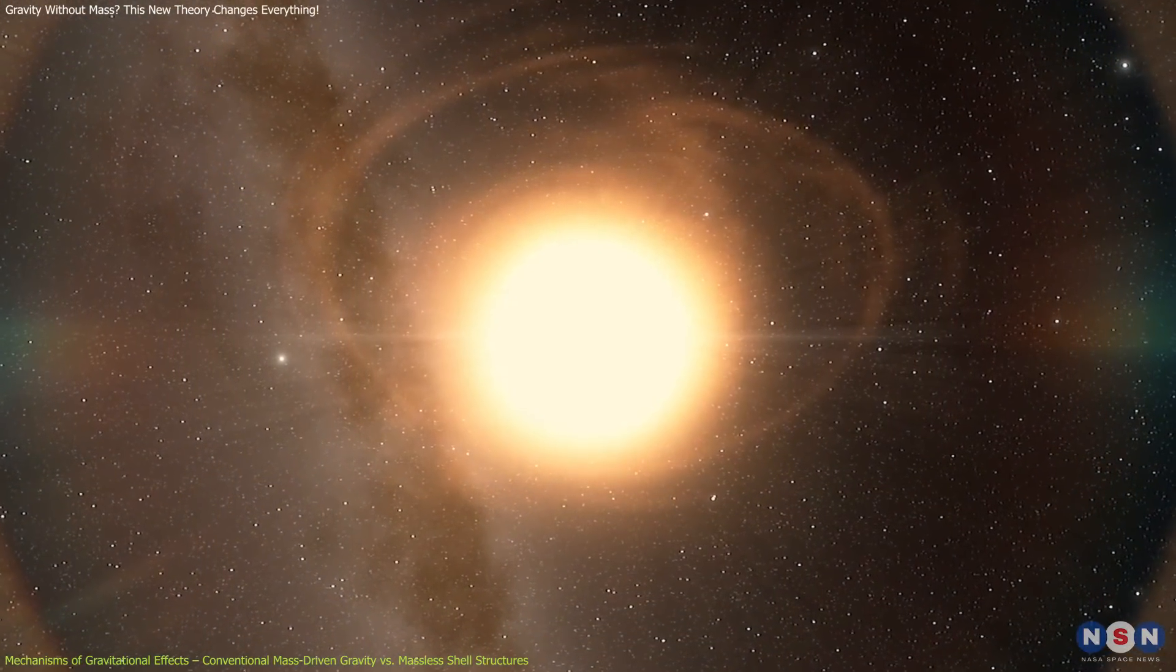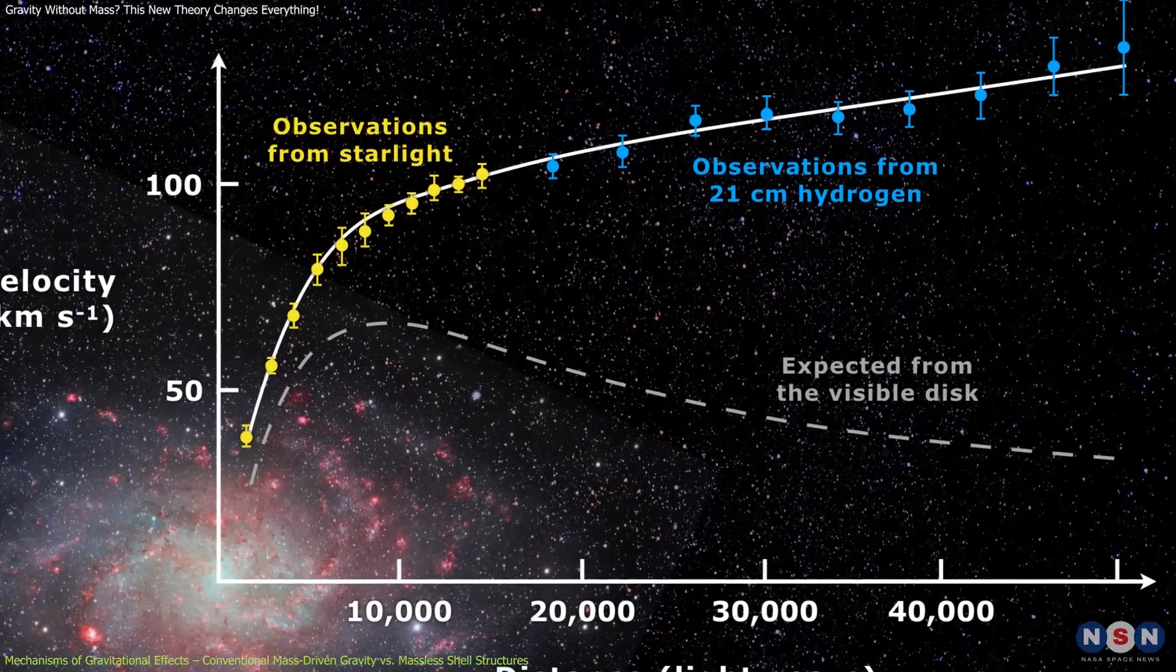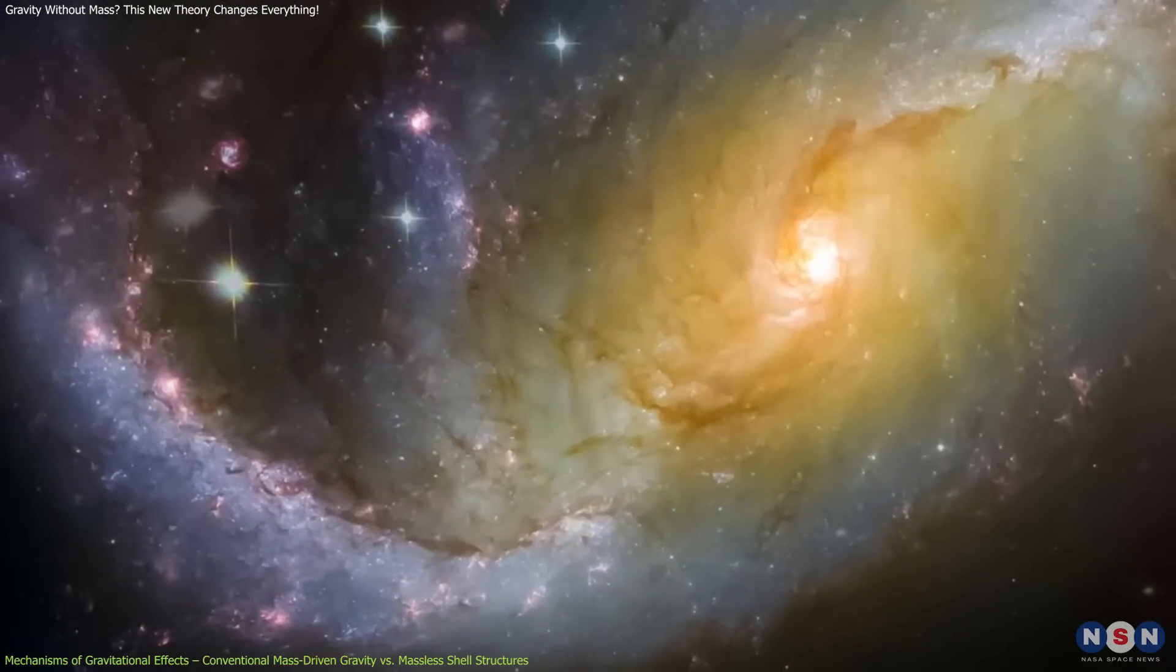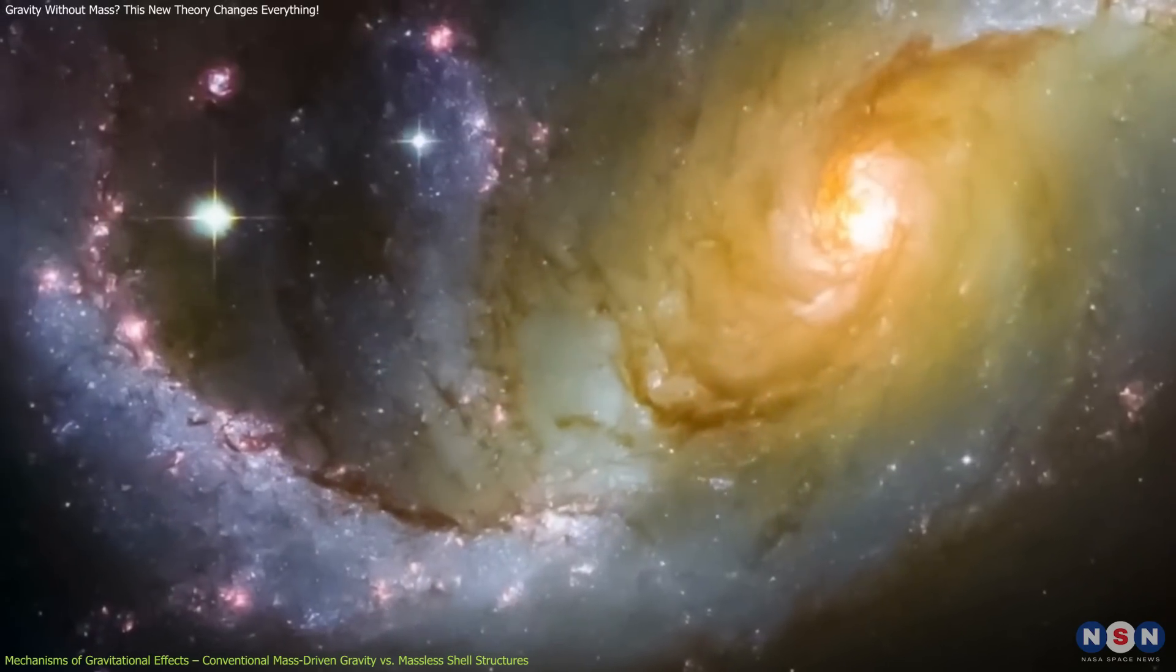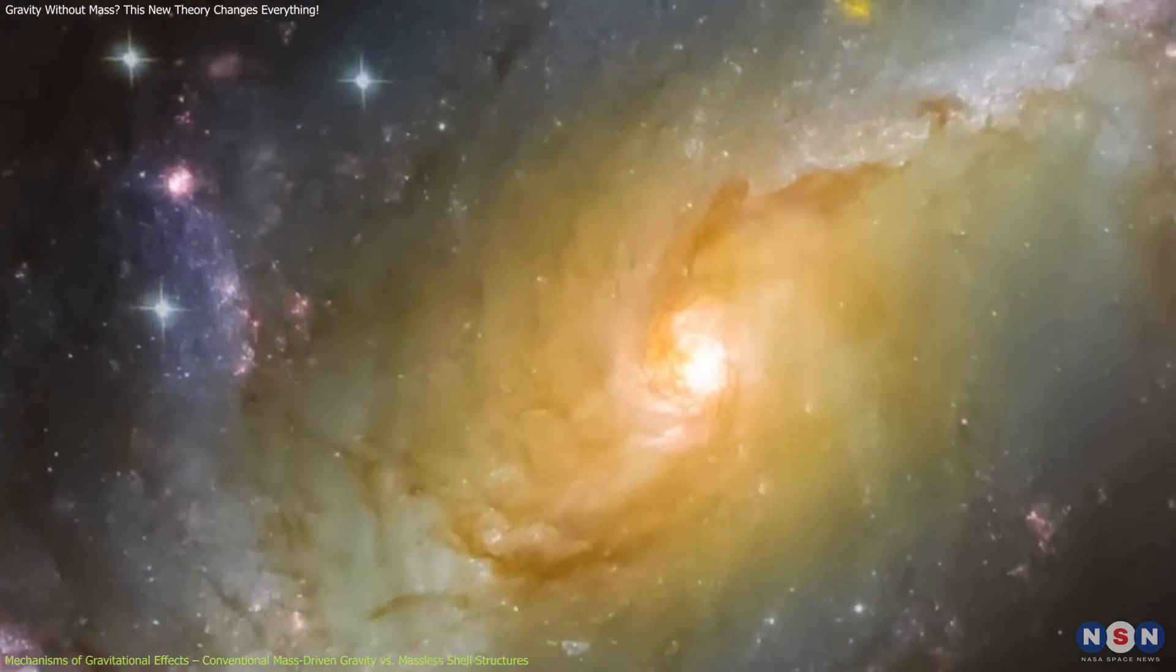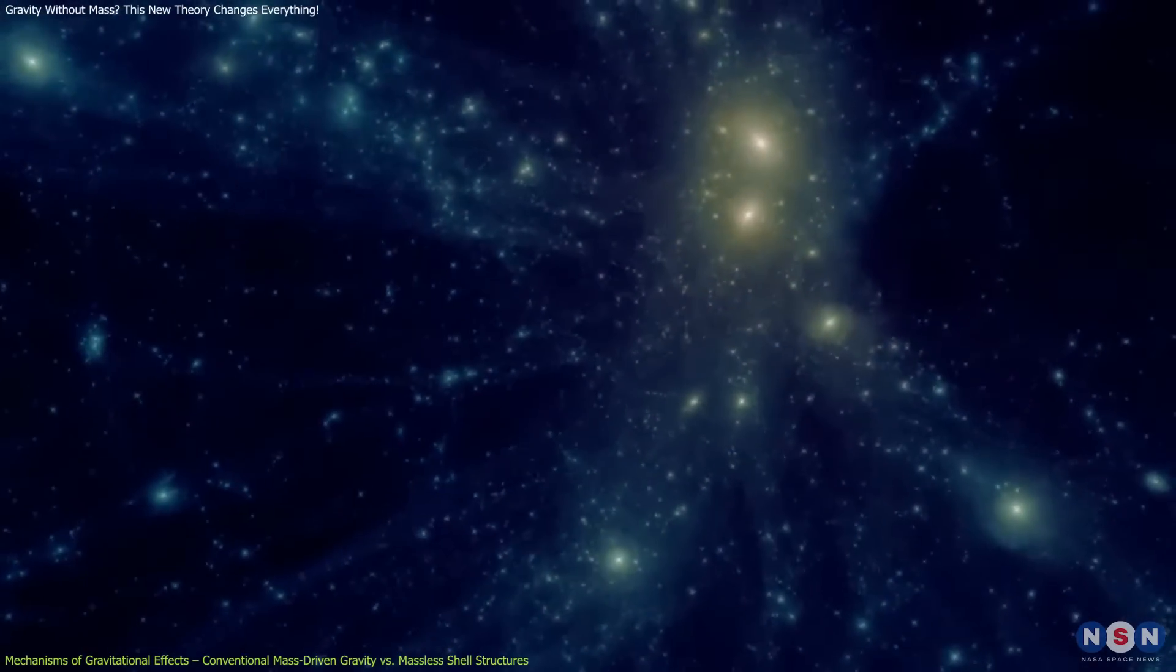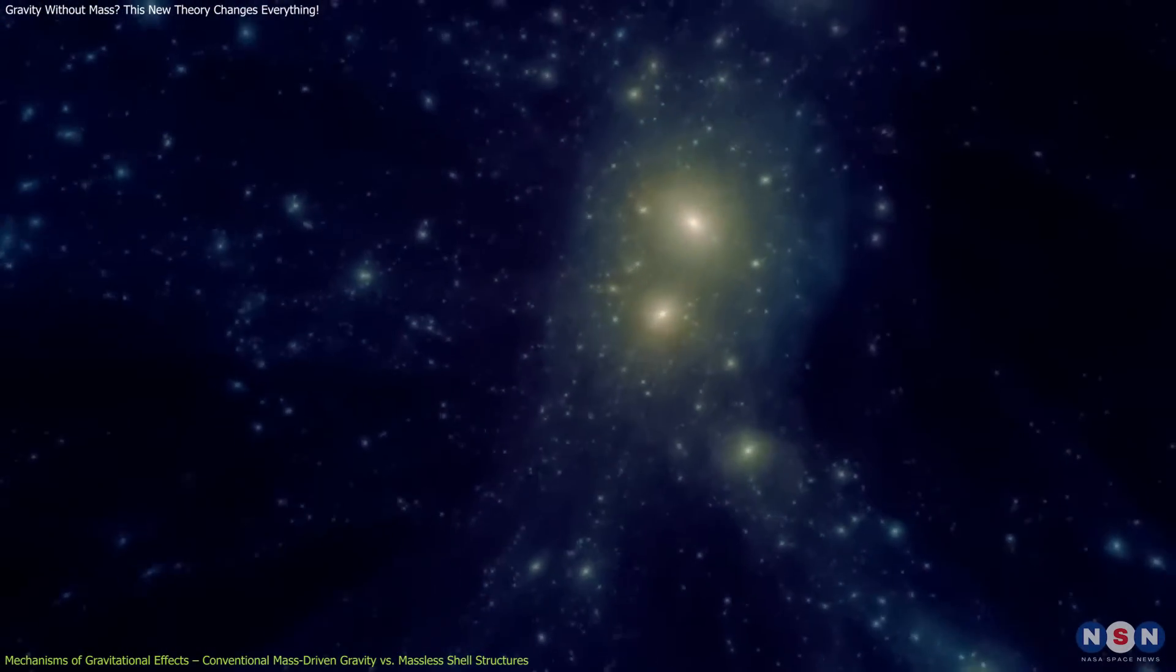This mechanism could explain the flat rotation curves of galaxies, the observation that stars at the edges of galaxies rotate at similar speeds to those near the center. In traditional models, this would require additional unseen mass attributed to dark matter.